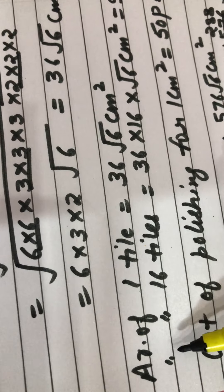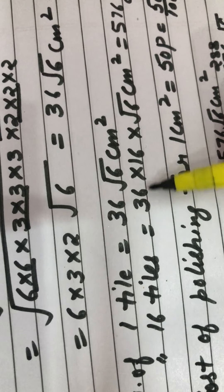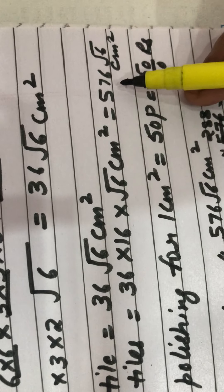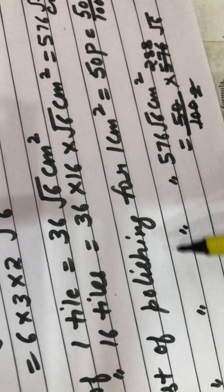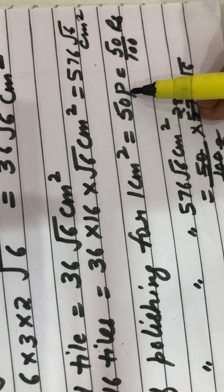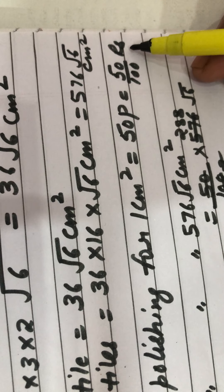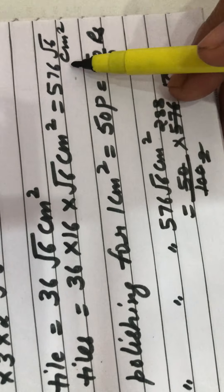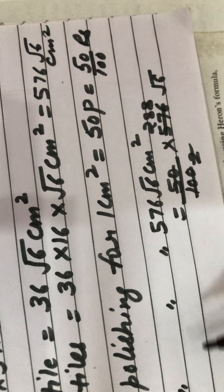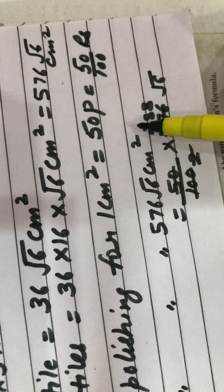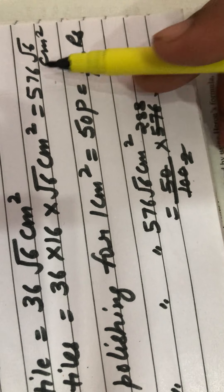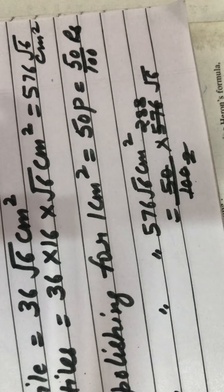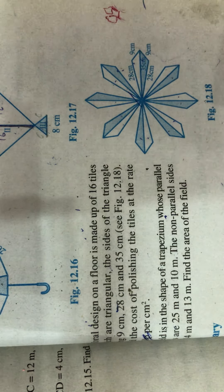Area of one tile is 36√6 cm². We have 16 tiles, so the area of 16 tiles = 36 × 16 × √6 = 576√6 cm². The cost of polishing is 50 paise per cm², and 50 paise = 50/100 rupees. The cost of polishing 576√6 cm² = (50/100) × 576√6. After simplifying, this equals 288√6 rupees.